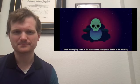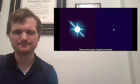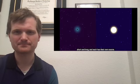GRBs accompany some of the most violent, cataclysmic deaths in the universe and the birth of black holes. There are two types of gamma ray bursts, short and long, and each has their own source.